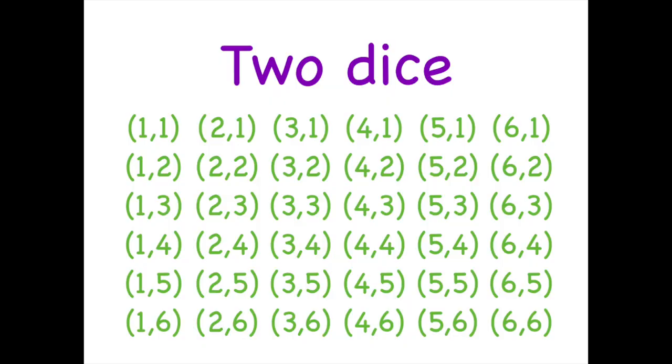If you roll two dice, there are 36 different things that can happen, because the first die can be any of six different numbers and the second die can be any of six different numbers. Those 36 different outcomes are what we have to simulate in the three-dice puzzle.